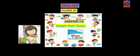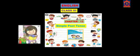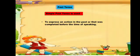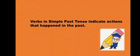We learned about present tense in our previous class and today we will learn about simple past tense — that is, how do we write about something that has happened in the past. Simple past tense is used to express an action in the past or that was completed before the time of speaking. Verbs in simple past tense indicate actions that happened in the past.